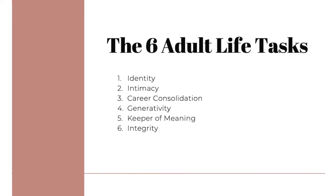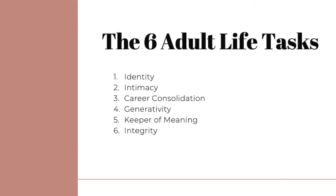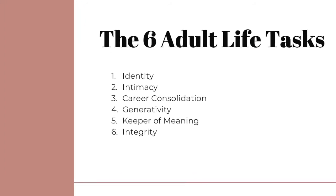In review, the six adult life tasks are: identity, intimacy, career consolidation, generativity, keeper of meaning, and integrity. As you go into adulthood and continue to develop, you'll develop these tasks — and if you've already developed them, you'll develop them even deeper and greater to better serve you as an adult moving into your later years of life.